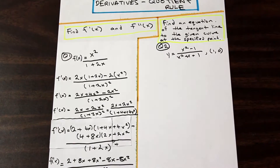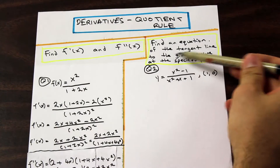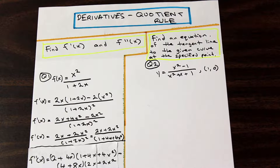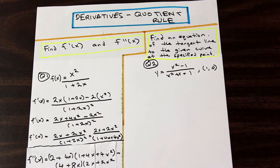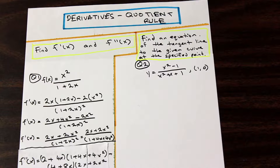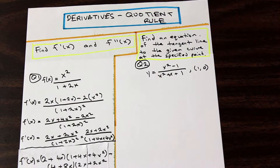Now let's move on to the second question: find an equation of the tangent line to the given curve at the specified point. We did a tangent line question in a previous video; this is a common Calculus 1 type question. This one features the quotient rule and then asks us to do something with the derivative. We know that taking the derivative of a function gives us the slope of the tangent line, so we need to take the derivative and then plug in our point.